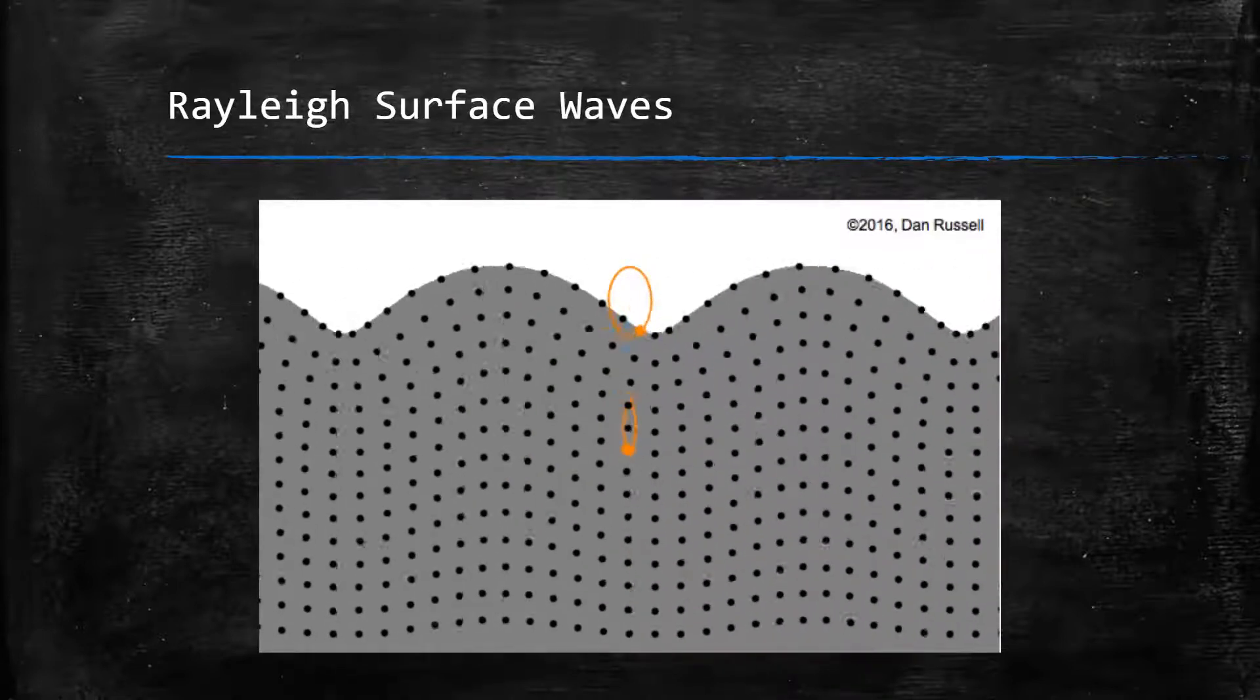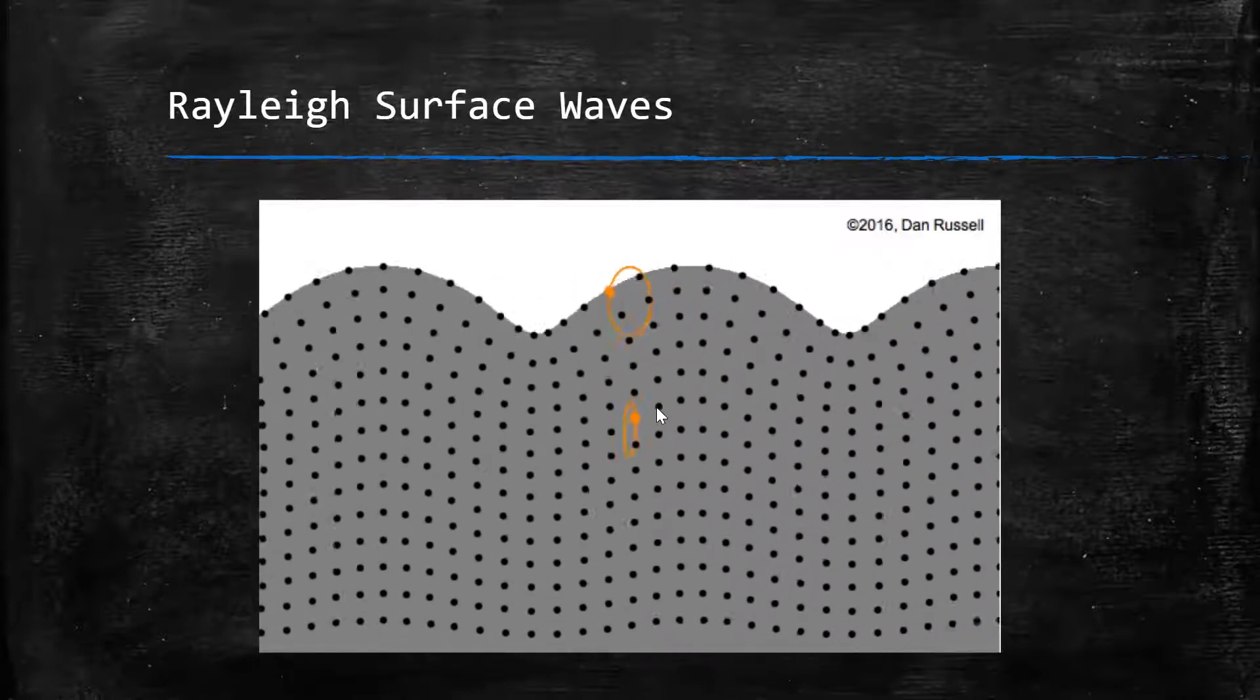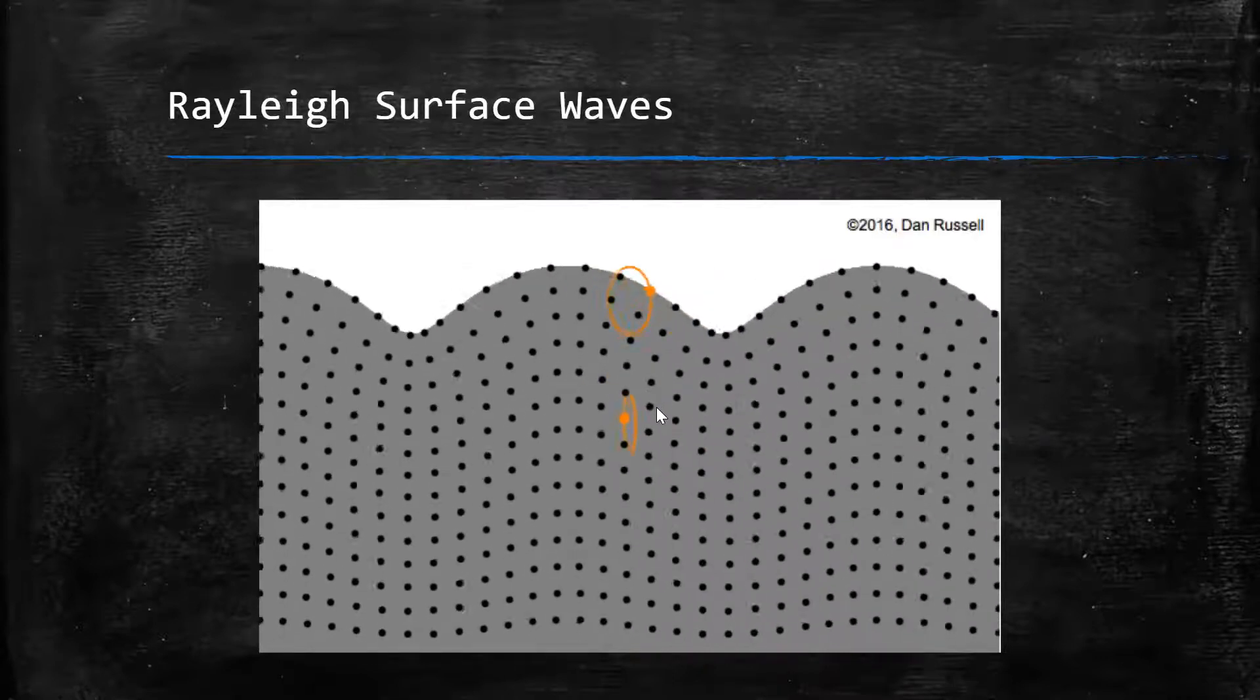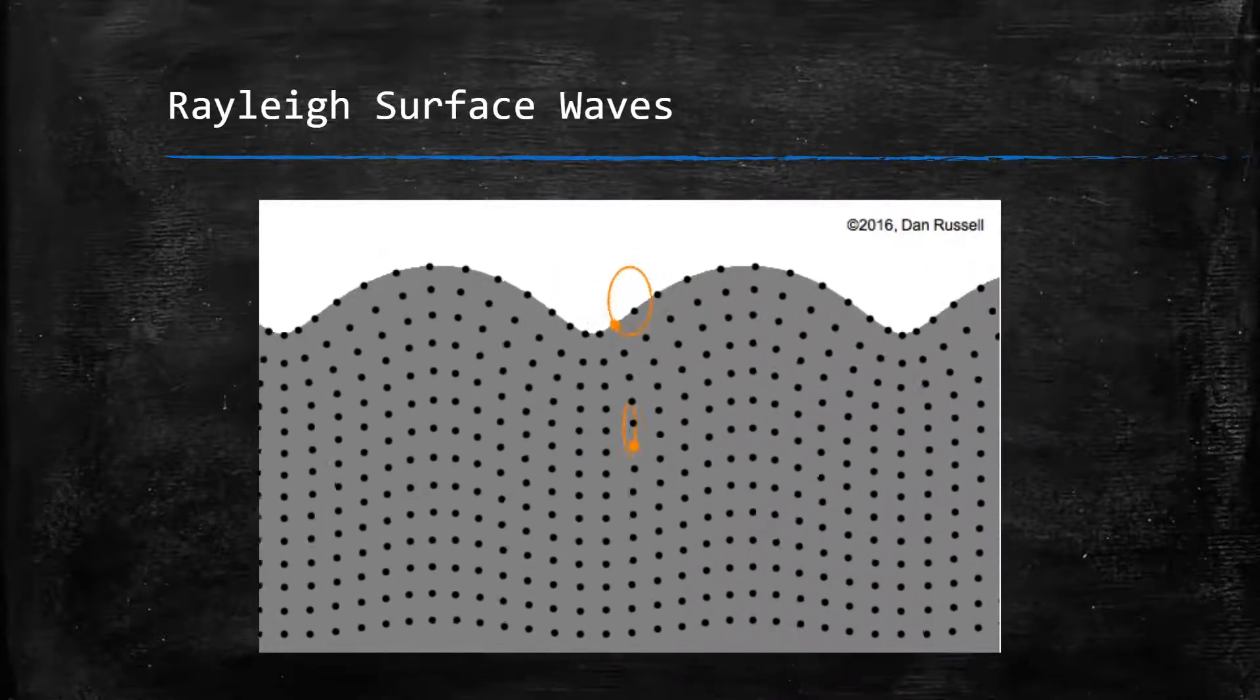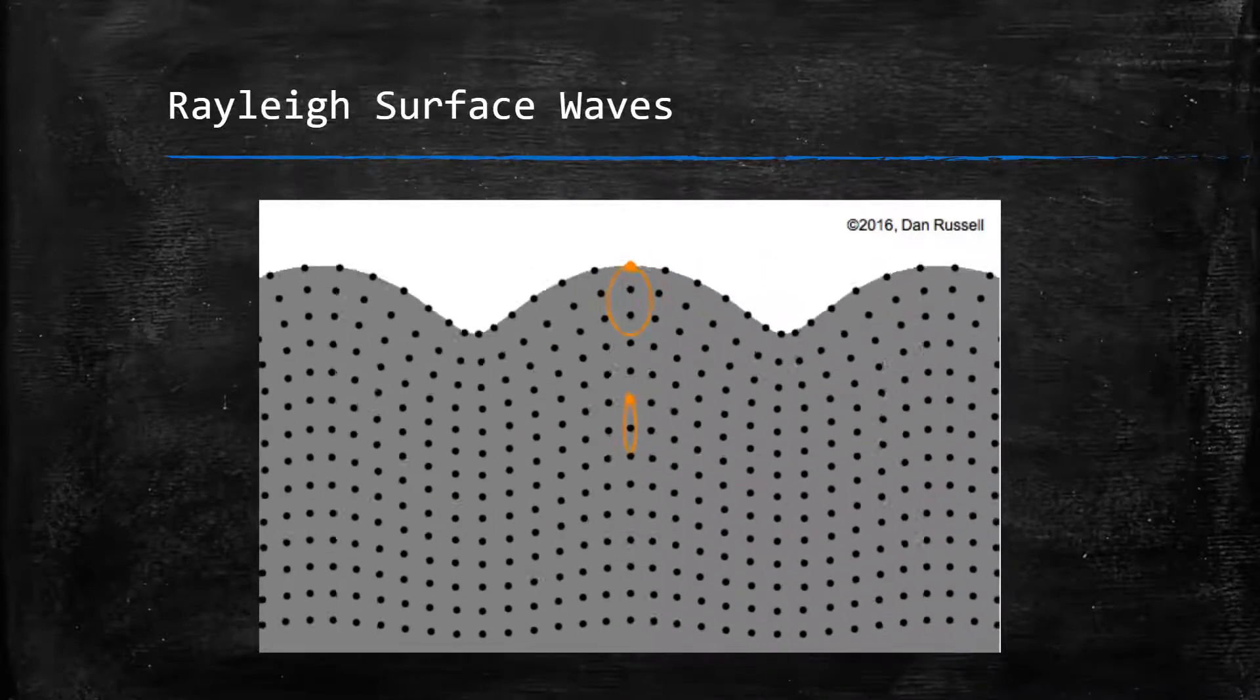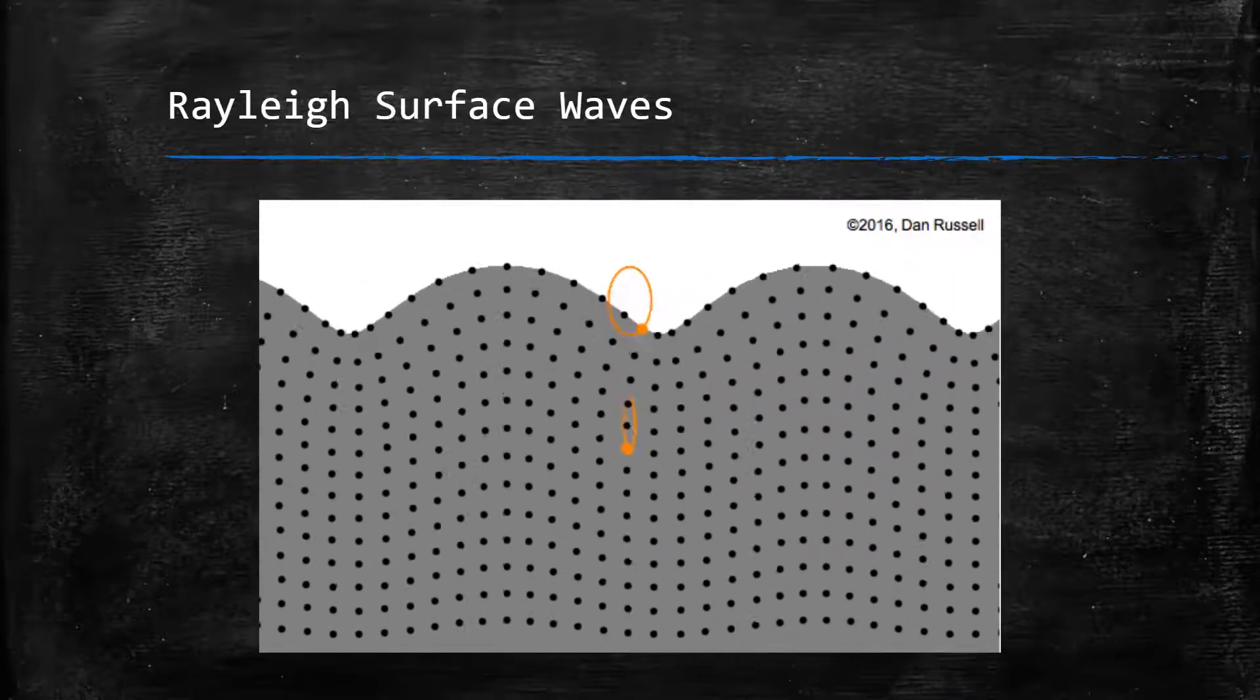The Rayleigh surface waves are the waves that cause the most damage during an earthquake. They travel with velocities slower than secondary waves and arrive later, but with much greater amplitudes. These are also the waves that are most easily felt during an earthquake and involve both up-down and side-to-side motion.